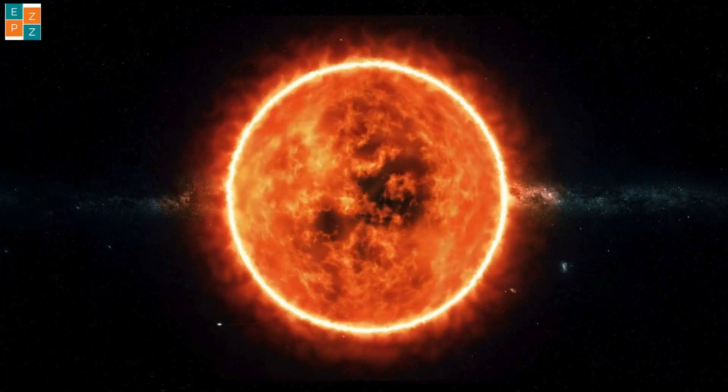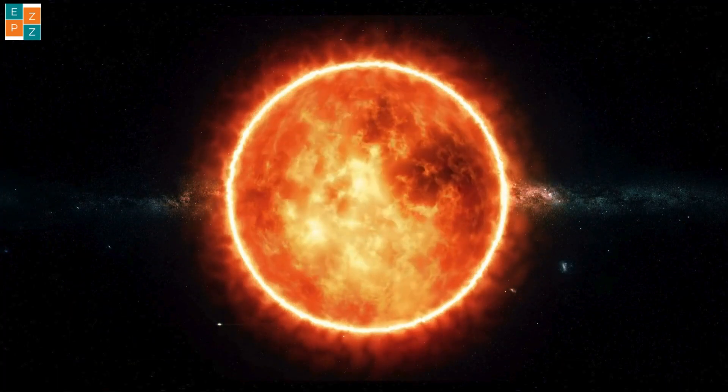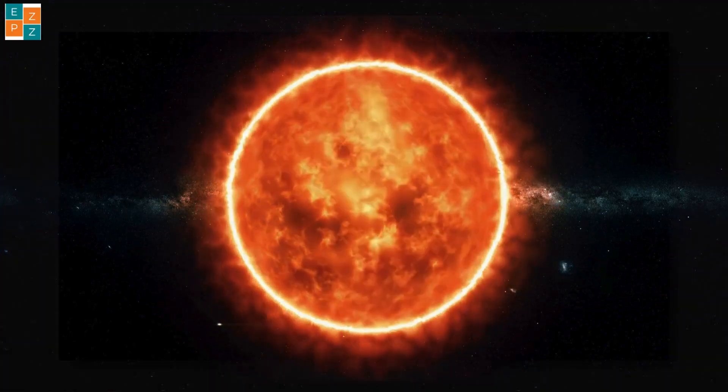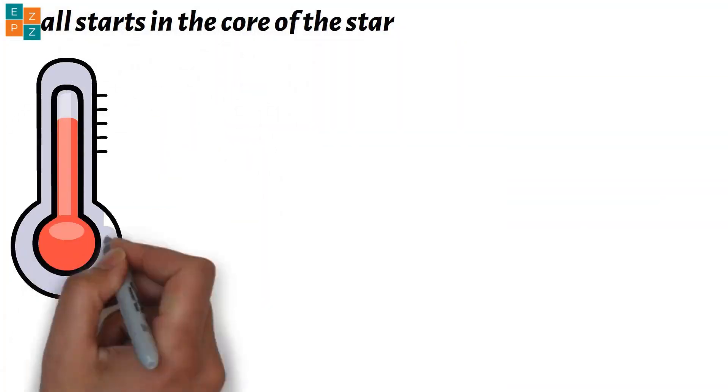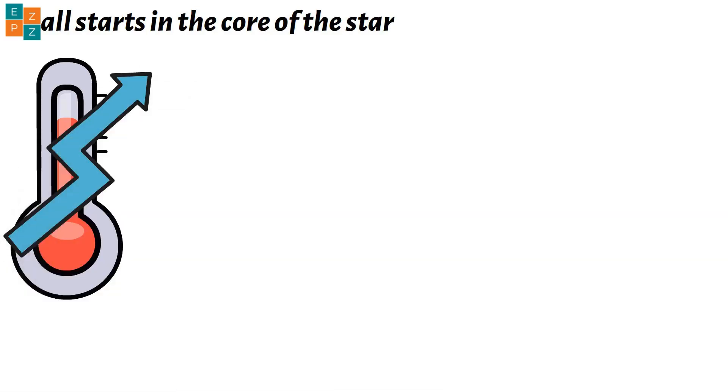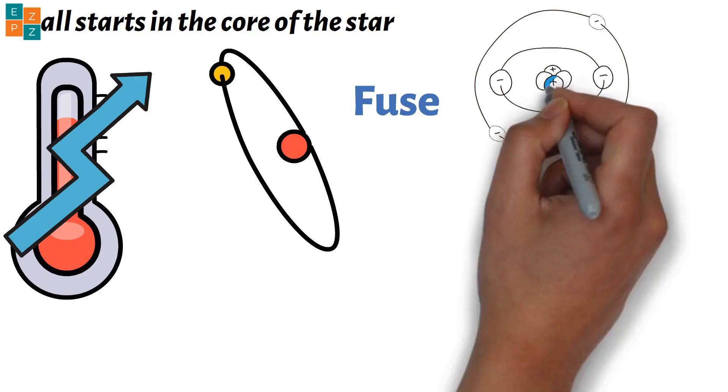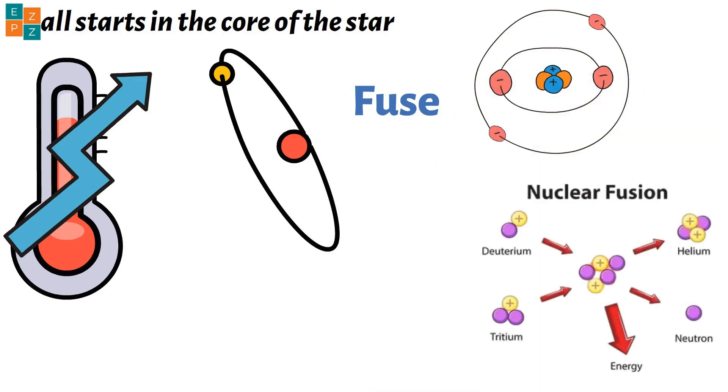But how does this mix of gases create that brilliant light we see from Earth? It all starts in the core of the star, where temperatures soar to millions of degrees. Here, hydrogen atoms collide and fuse together to form helium in a process called nuclear fusion.